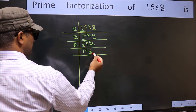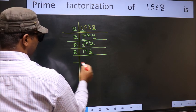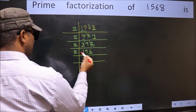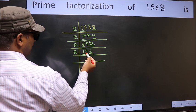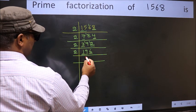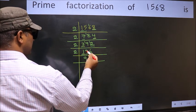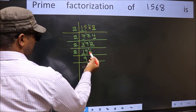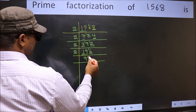Now the last digit is 6, which is even, so take 2. First number 1 is smaller than 2, so take 2 digits: 19. A number close to 19 in the 2 table is 2×9=18. 19-18=1, carry forward 1, giving 16. When do we get 16 in the 2 table? 2×8=16.